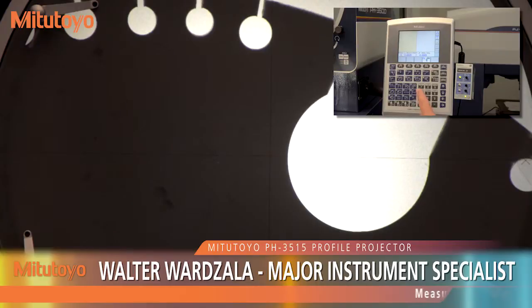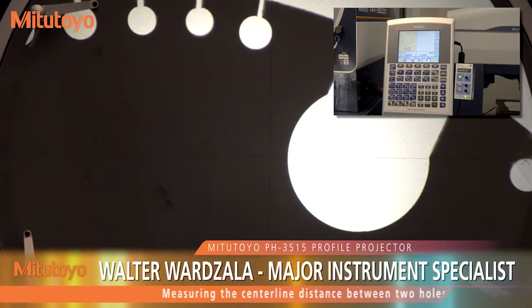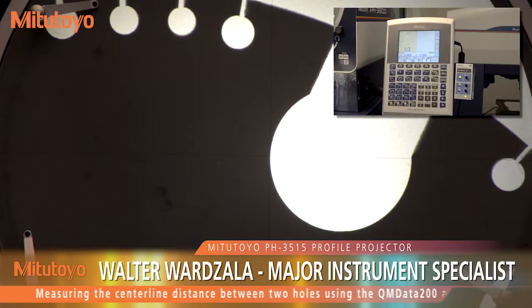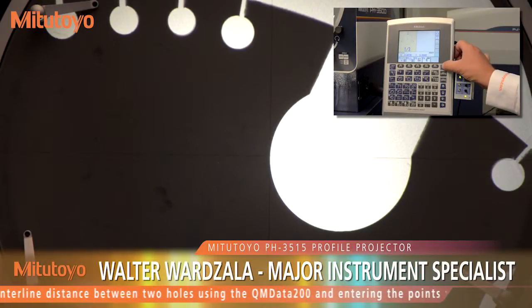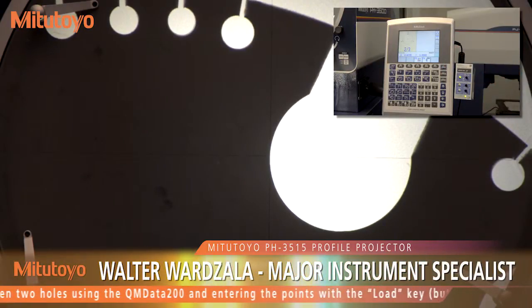To find the center line distance between two holes, first find the center of the holes by selecting circle from the basic feature command keys. A minimum of three points need to be entered to determine a circle.